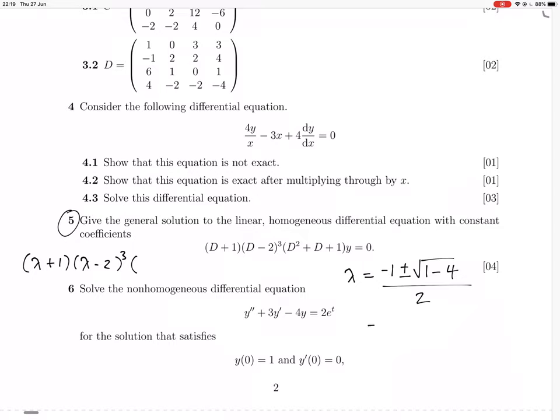Okay, so lambda then is minus 1 plus minus the square root of plus minus 3 times i. Not the square root of minus 1, is it the square root of minus 3? Oh no, sorry, the square root of 3 times i over 2. That's what the other lambda is.